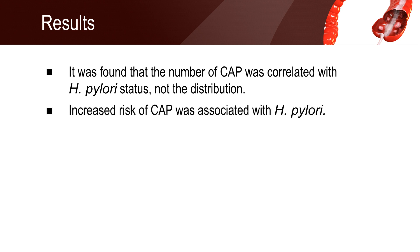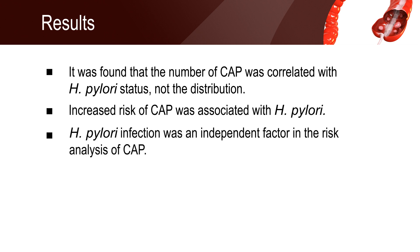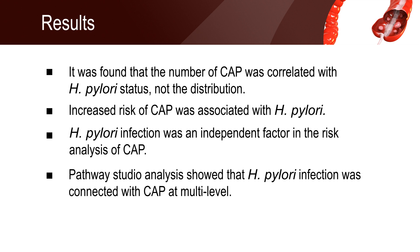After adjusting multiple parameters, an increased risk of colorectal adenomatous polyps was associated with Helicobacter pylori. Helicobacter pylori infection was an independent factor in the risk analysis of colorectal adenomatous polyps. By Pathway Studio analysis, it was found that the Helicobacter pylori infection was connected with colorectal adenomatous polyps at multi-level.